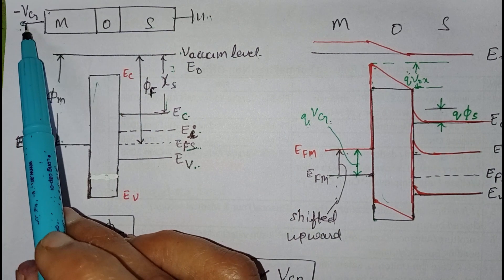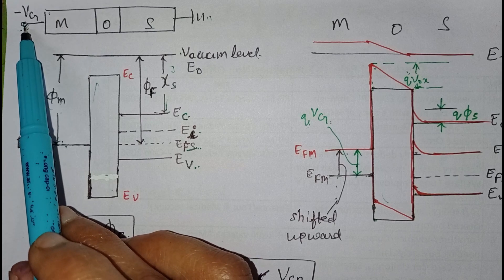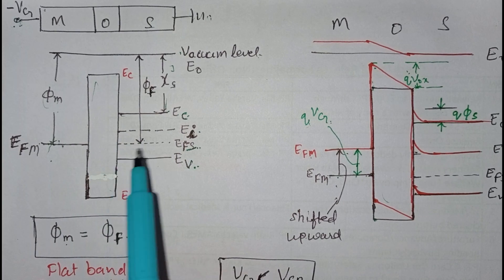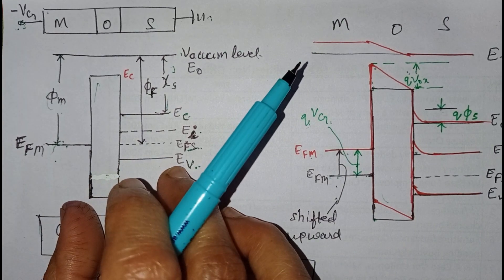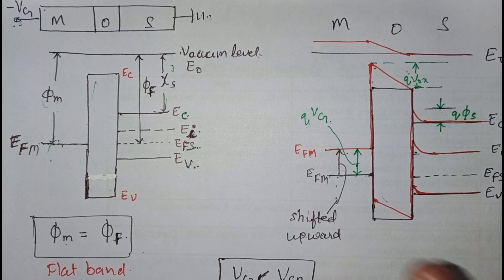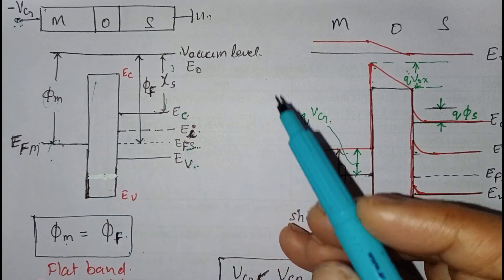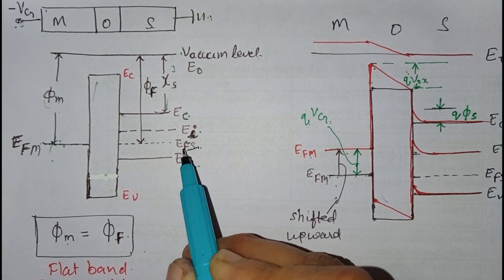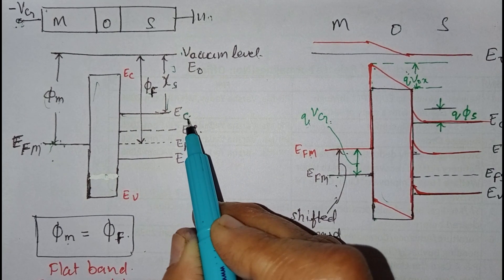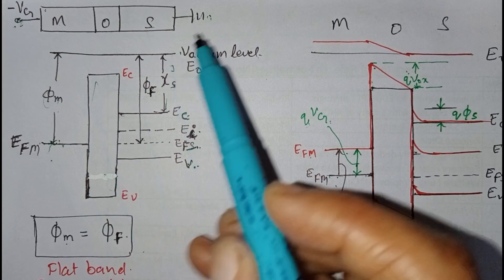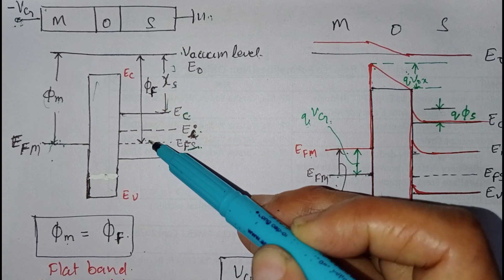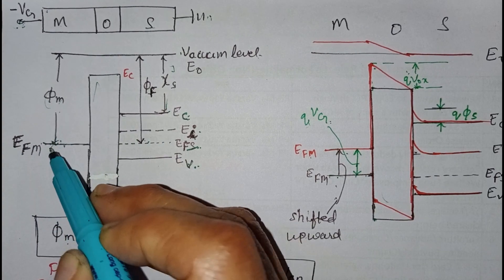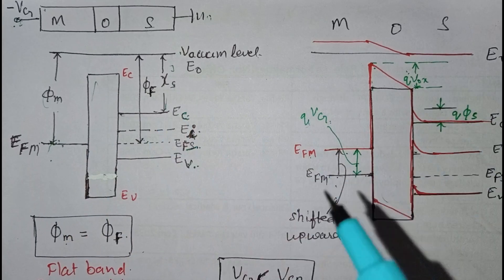Now we will discuss the energy band diagram in accumulation mode. When we apply a more negative voltage at the gate — less than the flat band voltage — with the substrate grounded, we enter accumulation mode. In the flat band energy diagram, the metal side shows Fermi level, phi_m as work function of the metal; the substrate shows valence band, Fermi level, intrinsic level, conduction band, phi_f as work function of the semiconductor, and chi_s as electron affinity.